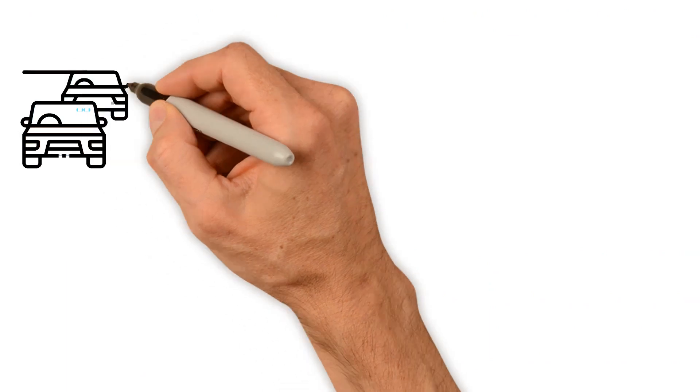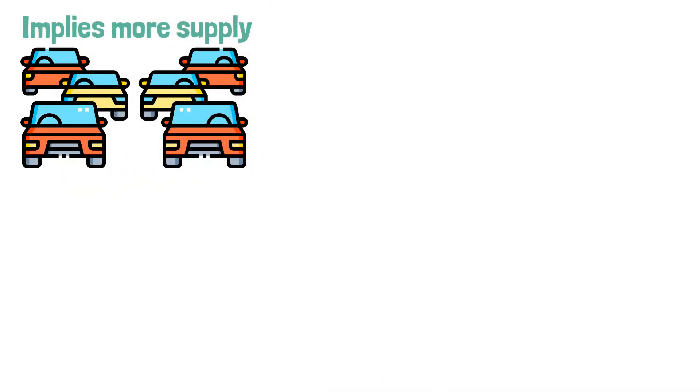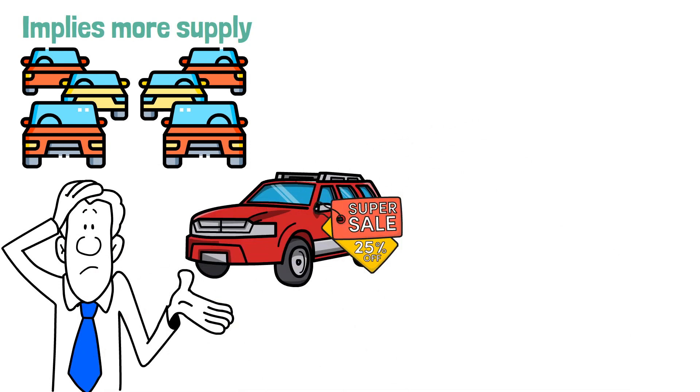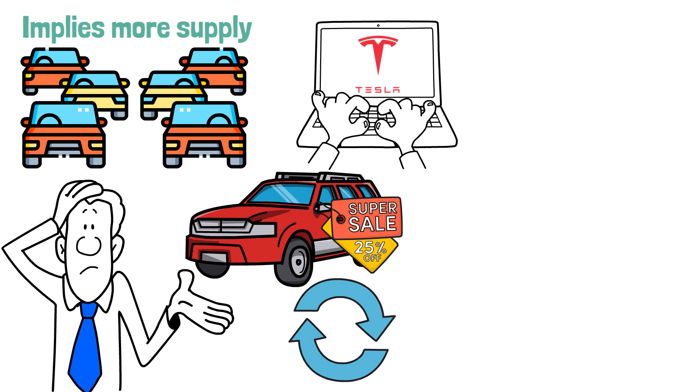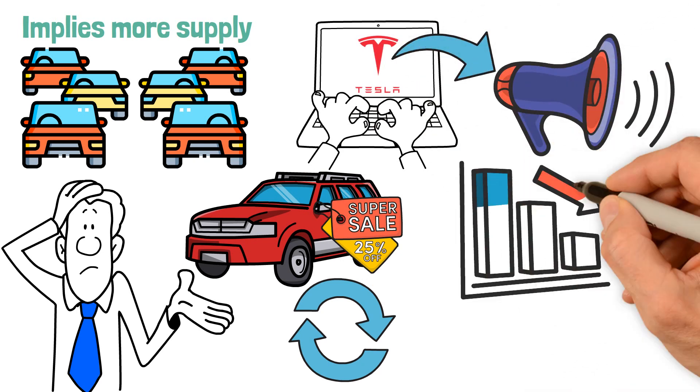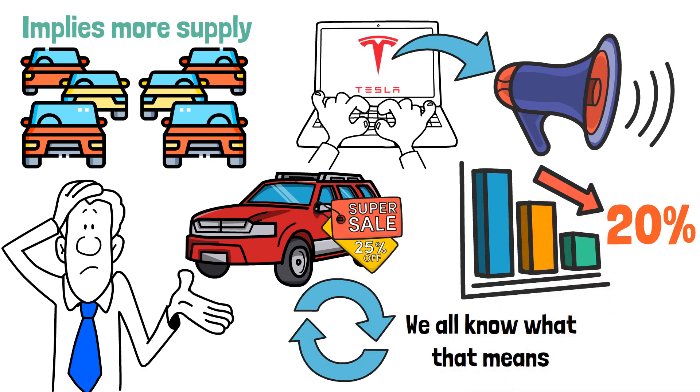But now, the fleets of these same dealers are growing, which implies more supply, forcing them to sell some vehicles for far less than their estimated values. The situation has completely turned around, and it's more than apparent. Tesla is one of the perfect examples out there. Earlier this year, Tesla announced they would be slashing their prices globally by at least 20%. We all know what that means.